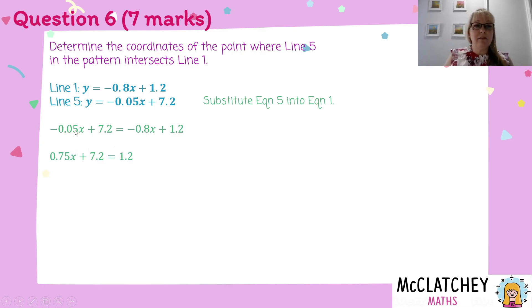What that will give us is 0.75x on this side. Now we're dealing with positive numbers. We've got equals plus 7.2 equals 1.2. Now we want to get x all by itself. To do that, I have to subtract 7.2 from both sides. And what I'm going to get again is 0.75x equals negative 6.